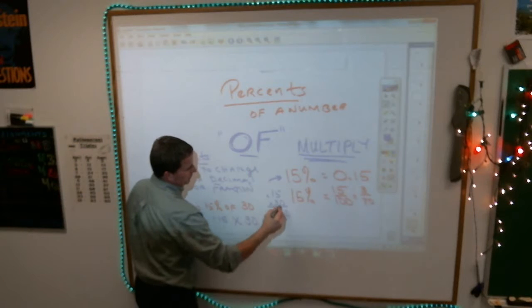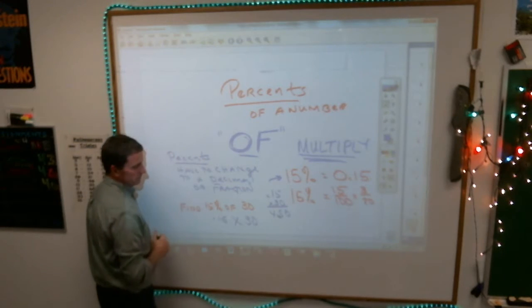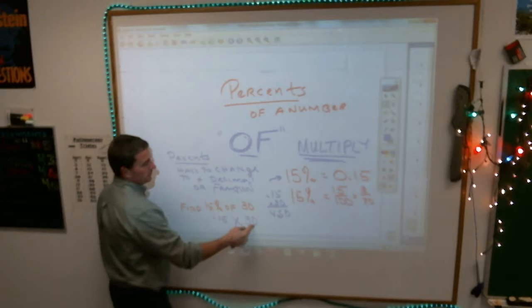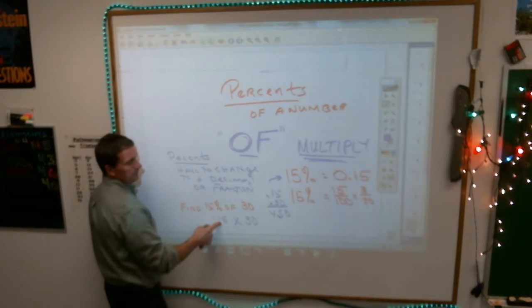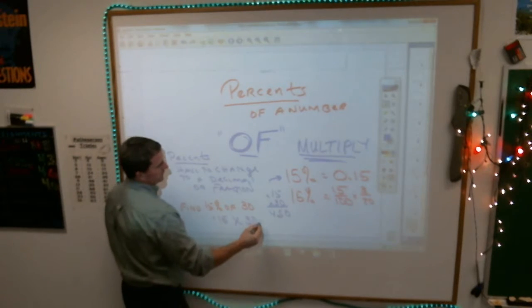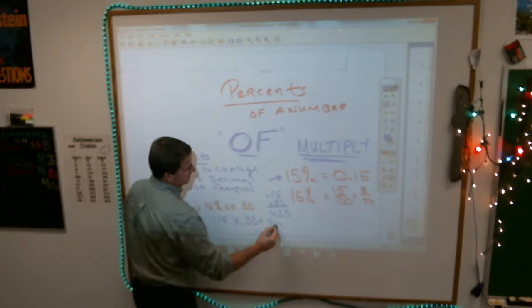if I take 0.15 and multiply it by 30, I get what? 4.50. If you bought a meal for $30 and they asked you for a 15% tip, you'd have to give the waitress $4.50.